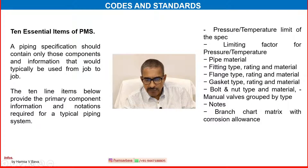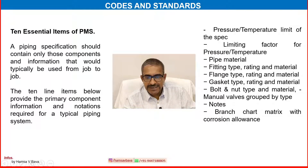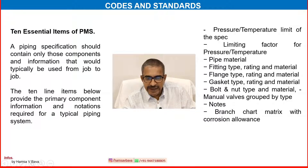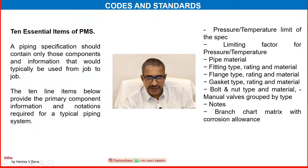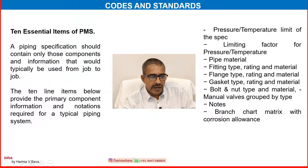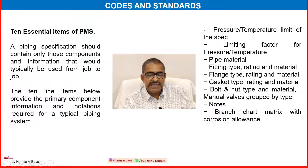The 10 essential items of piping material specification are: 1) Pressure and temperature limits of the specification; 2) Limiting factor for the pressure and temperature; 3) Piping material; 4) Fitting type, rating and material; 5) Flange type, rating and material; 6) Gasket type, rating and material; 7) Bolt and nut type and material; 8) Manual valves grouped by type; 9) Any notes; and 10) Branch chart matrix with corrosion allowances.